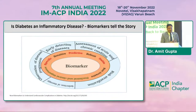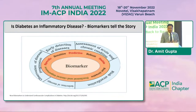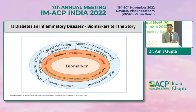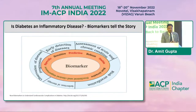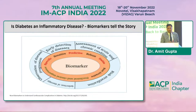COVID-19, as we all know, led to a state of chronic inflammation — that is what long COVID is — and we have seen a surge in patients with type 2 diabetes following COVID infections. Those who had pre-diabetes were actually converted into type 2 diabetes. So COVID has again established that chronic inflammation can trigger a milieu leading to hyperglycemia and worsening of hyperglycemia, as well as new onset diabetes.